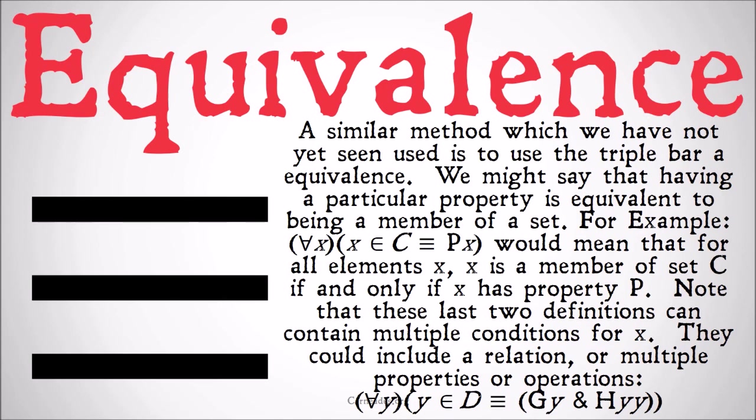A similar method, which we've not yet seen, is to use the triple bar of equivalence. We might say that having a particular property is equivalent to being a member of that set — you have that property if and only if you are a member of that set. For example, for all x: x is a member of C is materially equivalent to x is a P. This means that for all elements x, x is a member of set C if and only if x has the property P.